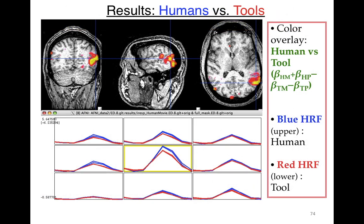The results show human motion (outline and real human motion) minus tool motion (simple motion in real or outline video). The blue HRF curve represents human movement videos and the red HRF represents tool videos. The shapes were actually pretty similar, so a block model might have worked just as well — but this wasn't known ahead of time. The analysis also confirmed that parts of the brain are more sensitive to complex naturalistic motion.